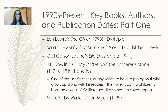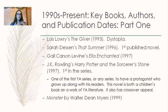For this more modern period, here are some key books, authors, and publication dates. In 1993, Lois Lowry publishes The Giver — that's a dystopia, a book about a world where things go very wrong. A utopia is the concept of a perfect world; the term comes from Sir Thomas More and means 'no place,' suggesting such a perfect society doesn't exist. A dystopia is the opposite — a world where things go really wrong.